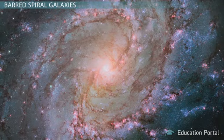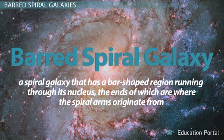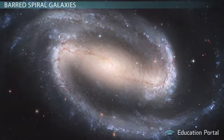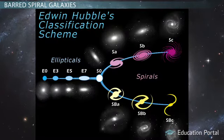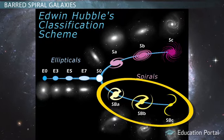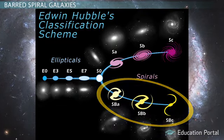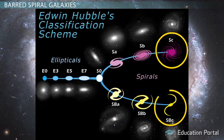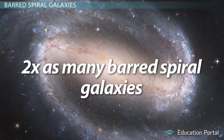There is another kind of spiral galaxy beyond the three we went over. A barred spiral galaxy is a spiral galaxy that has a bar-shaped region running through its nucleus, with the spiral arms originating from the ends of that bar. Barred spiral galaxies are also subdivided like normal spiral galaxies, except they are designated SBa, SBb, and SBc. Everything else is basically the same — for example, both a spiral type C and a barred spiral type C have a very small central bulge and loosely wound arms. There are about twice as many barred spiral galaxies as ordinary spiral galaxies.